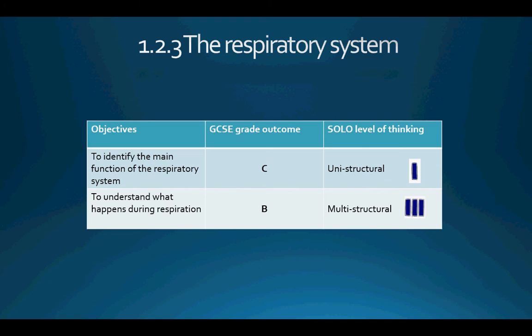This video is going to be focusing on section 1.2.3, the respiratory system. Our first objective today is to identify the main function of the respiratory system, which would allow you to access grade C style questions on your end of year exam paper. Our second objective is to understand what happens during respiration, which is a process that takes place in your muscles as you exercise — this would allow you to access grade B questions on an exam paper.